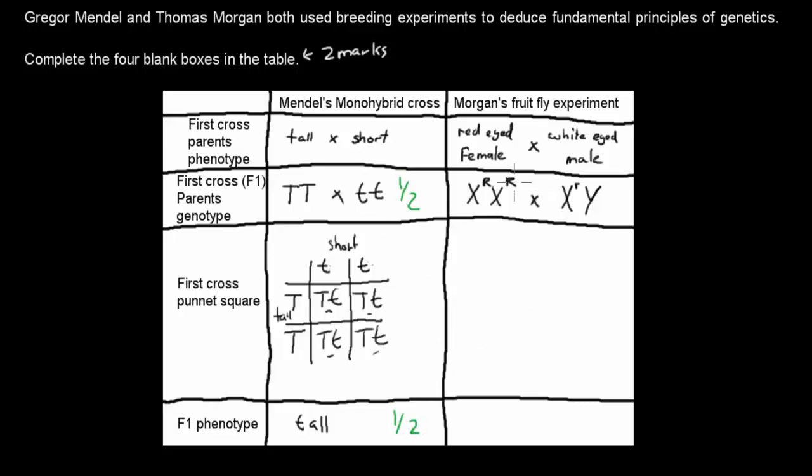And then going to the second part, which was Morgan's fruit fly experiment. Remember that was about sex linkage. He did this experiment with sex linkage. He had one red-eyed female crossed with a white-eyed male. The actual genotypes were as following: X with two dominant red-eyed X's, and the white-eyed male had a recessive small r X and a Y.